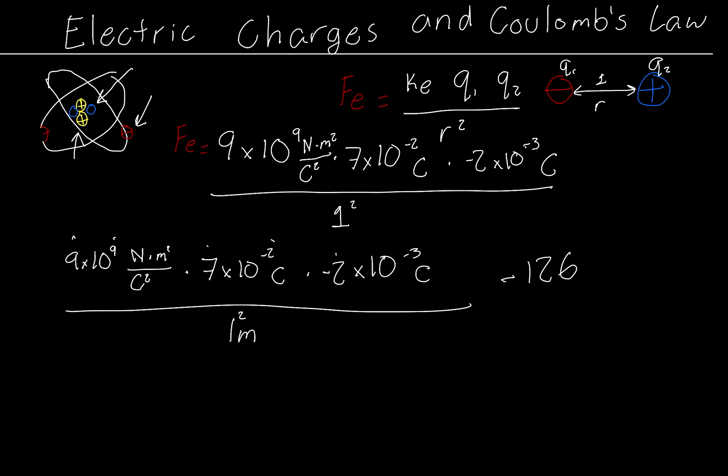And the 1 is squared. Now, to solve this, we can just multiply 9 times 7 times negative 2. So we have 126. And then the exponents, we can just add them. So that would be 9 minus 2 is 7, minus 3, that would be 4. So we have times 10 to the negative 4. And then 1 squared is just 1. And Coulombs squared cancels with Coulombs squared. Meter squared cancels with meter squared. And that means we're left with Newtons, which is exactly the unit that we want to have. Now, this divided by 1, it just is negative 126 times 10 to the negative 4. And that's it. That would be our answer.